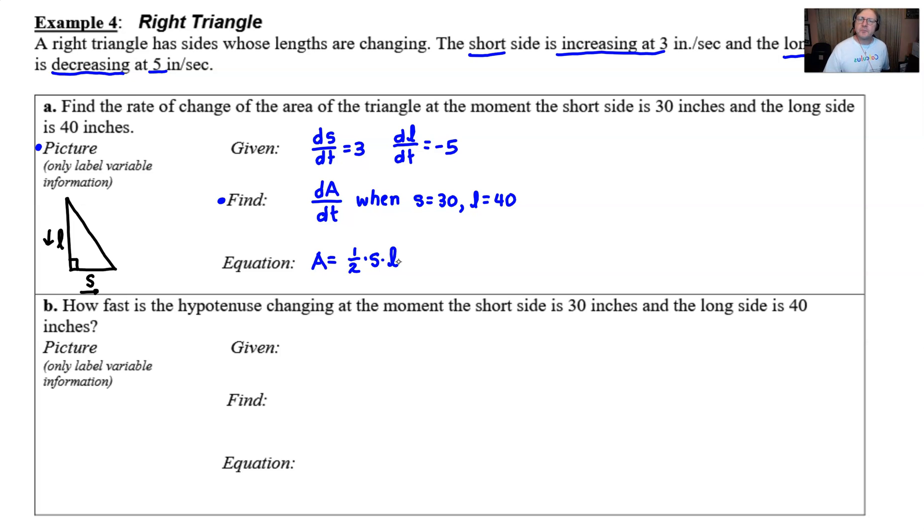It is a calculus problem, so you're probably going to take a derivative. If we take the derivative of the area with respect to t, hopefully you realize that we have to use the product rule. I'm going to let the one half S go along together as the first function and then the L will be by itself as the second function. So the derivative of the first function with respect to t would be one half times ds/dt. I will multiply that by the second function L. To that I will add the first function one half S and then multiply by the derivative of the second function with respect to t, which would again give us dL/dt.